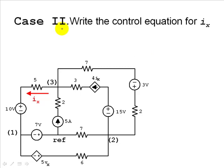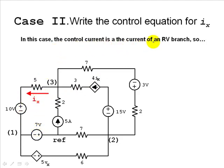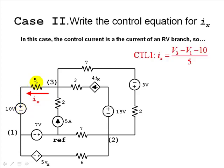Case 2: the controlling current IX is the current in the same RV branch, but pointing the other way. That current is still the current in an RV branch, and we know how to write it as a function of node voltages V3 and V1. IX equals V3 minus V1 minus 10, divided by 5 ohms. That would be our CTL1 equation.